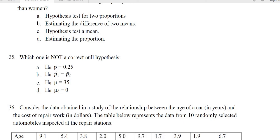Let's do problem number 35. Which one is not a correct null hypothesis? Well, in that case, it would be B. B is not a correct null hypothesis.